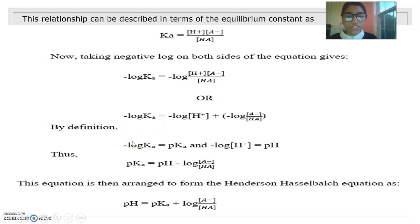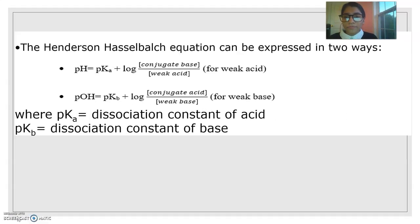Thus, pKa = pH - log[A-]/[HA]. This equation is then arranged to form the Henderson-Hasselbalch equation as: pH = pKa + log[A-]/[HA].